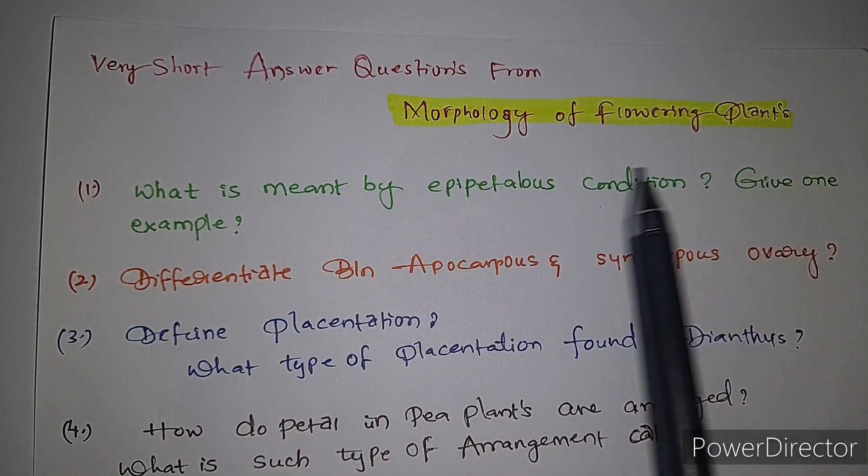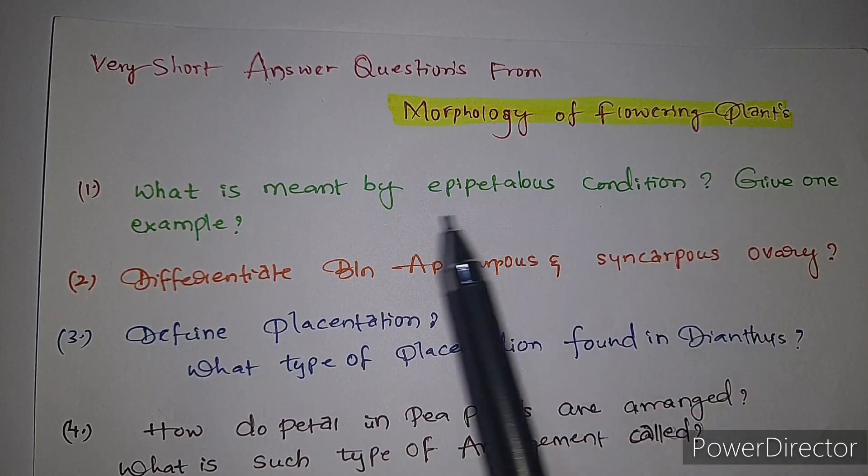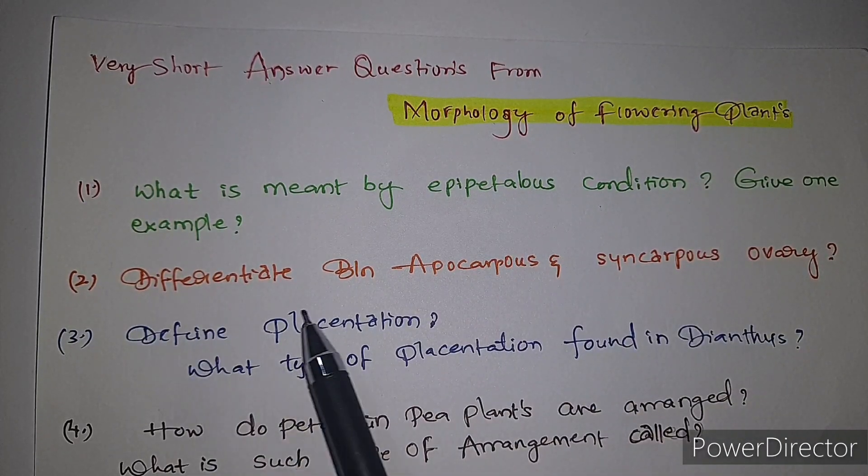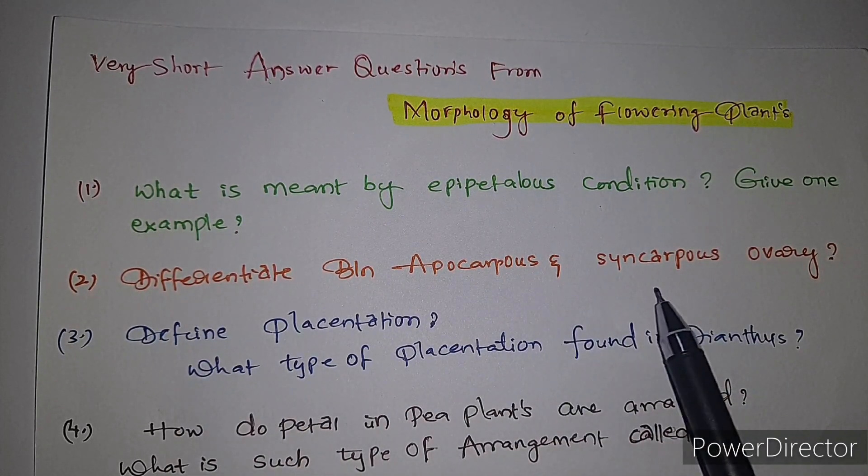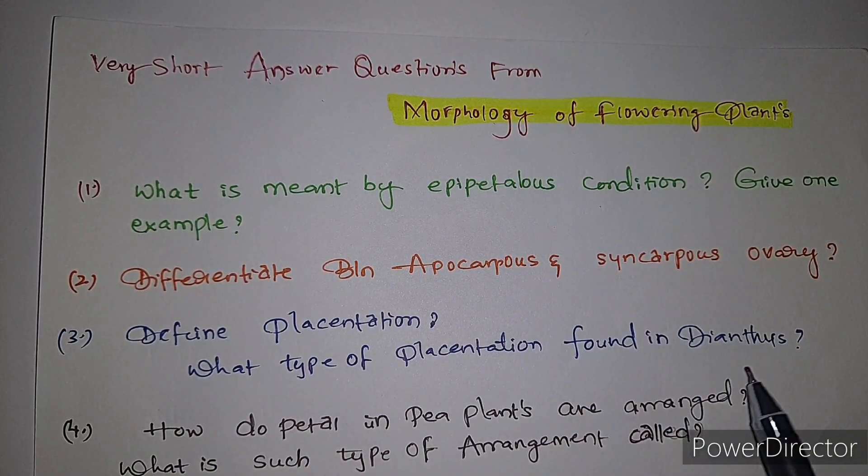Sixth question: define communities. Who classified plant communities into hydrophytes, mesophytes, and xerophytes? Very short answer questions from morphology of flowering plants. First question: what is meant by epipetalous condition? Give an example.